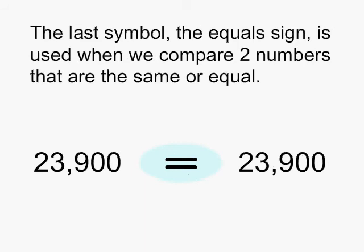The last symbol, the equal sign, is used when we compare numbers that are the same or equal, such as the one below, 23,900 is equal to 23,900.